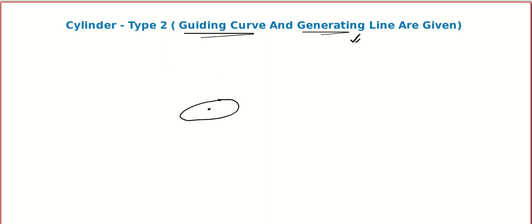So what we do is we learn a process here. For those students who can understand the logic, it will be very good. So let's say we have the guiding curve and we imagine the generating line. We take the locus point to be x1, y1, z1. This point will be on the cylinder and hence on the generating line. We are going to find the relation between x1, y1, z1 so that later on we can generalize. You can learn this as a procedure.